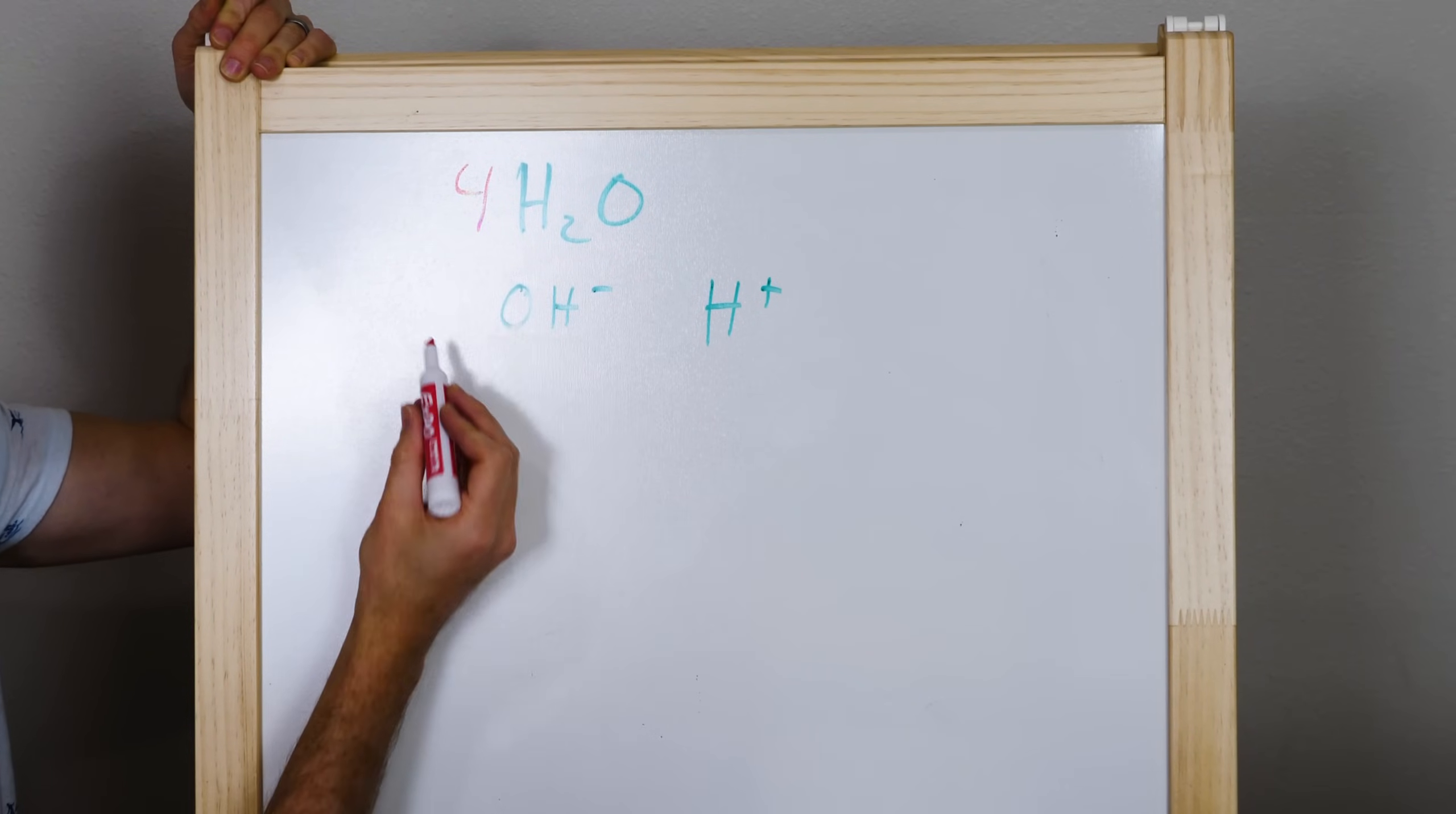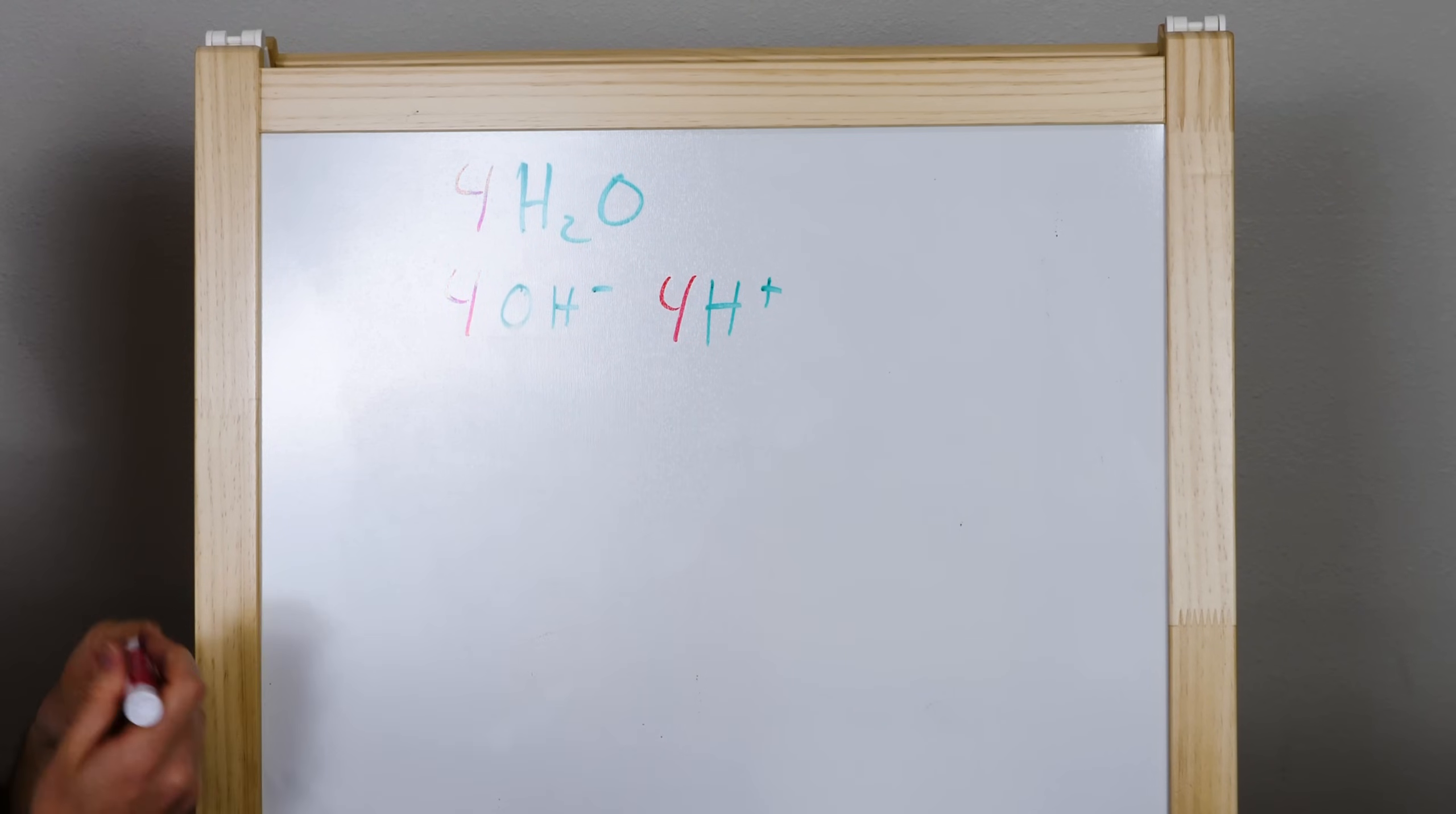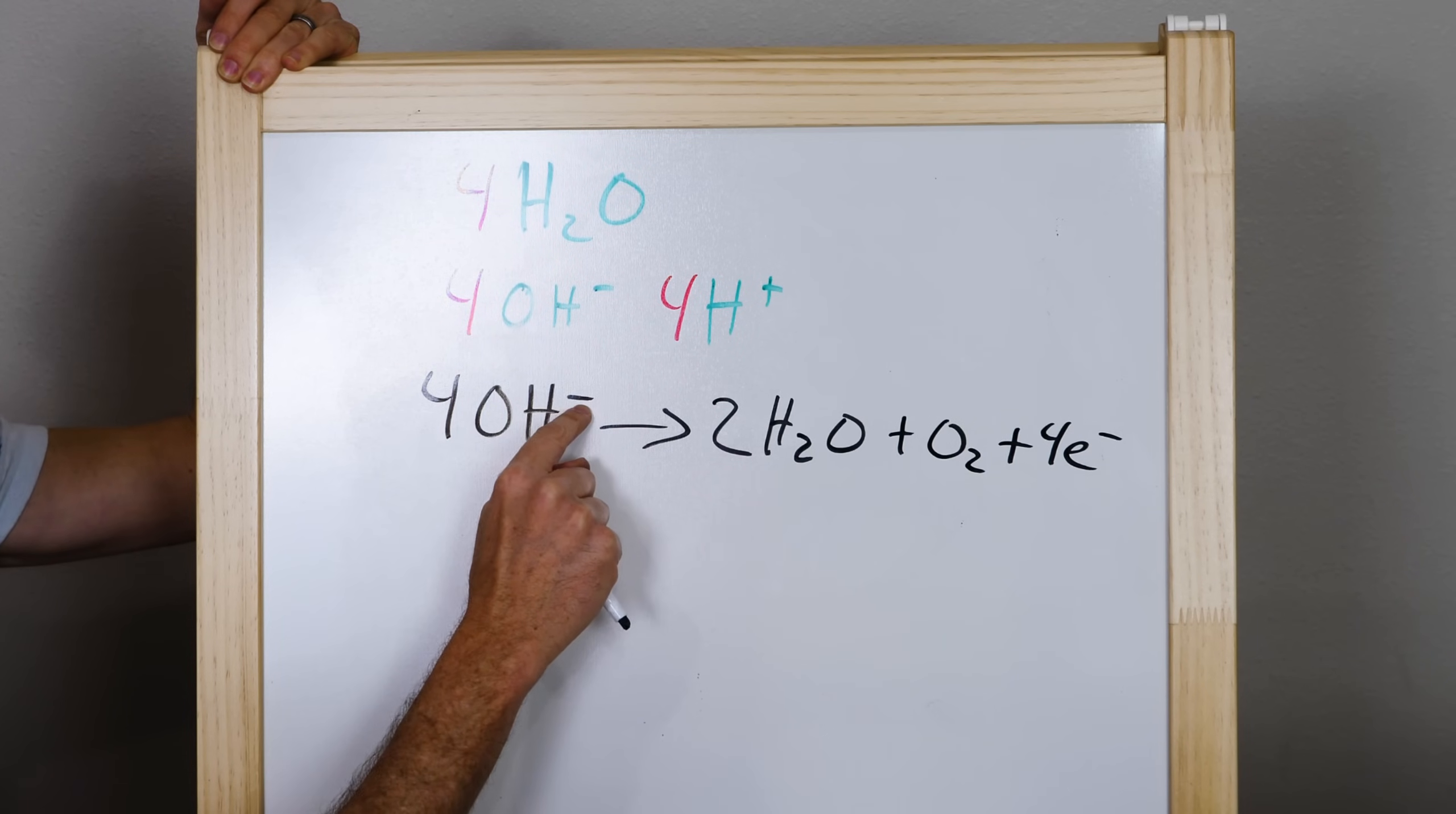For example, let's say we've got four water molecules that had naturally split into four OH molecules and four H plus molecules. Well before they could combine back together, let's say we just took this OH molecule here and pulled its electrons off.